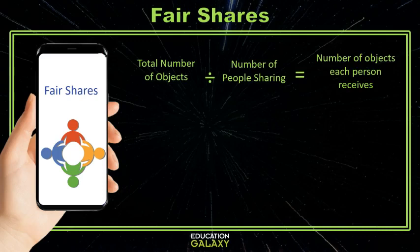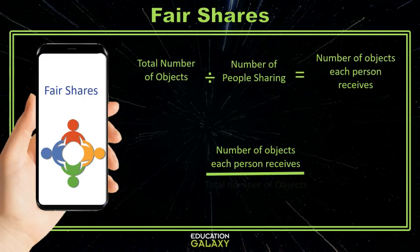To find the fraction of objects each person receives, use the number of objects each person receives as the numerator and the total number of objects as the denominator. Let's try some practice problems.